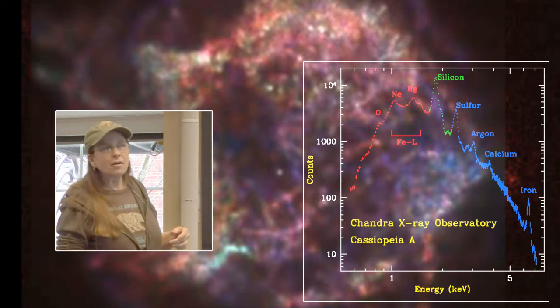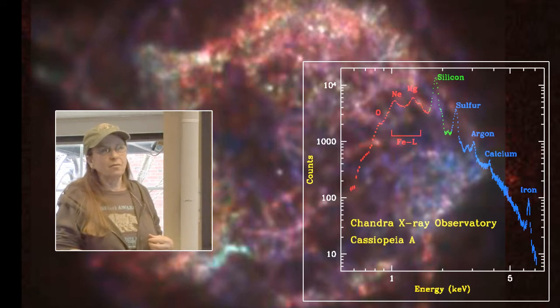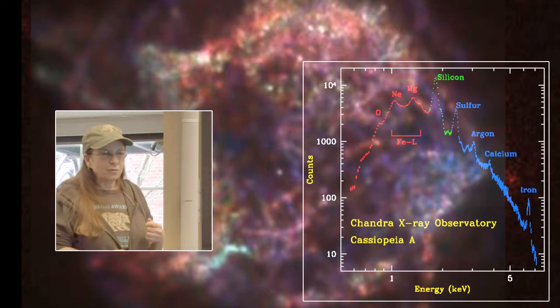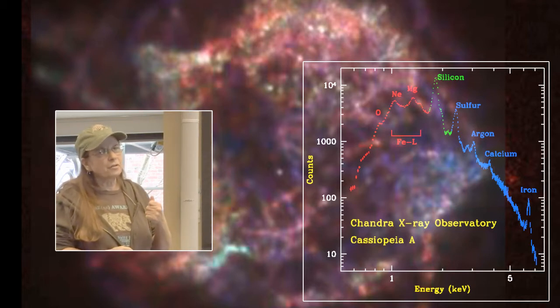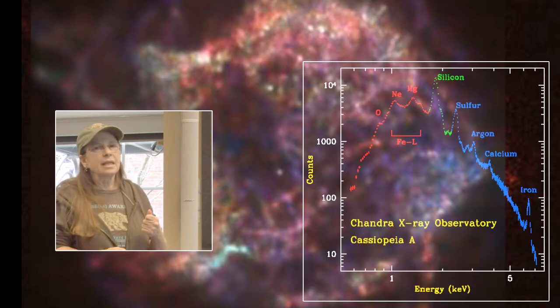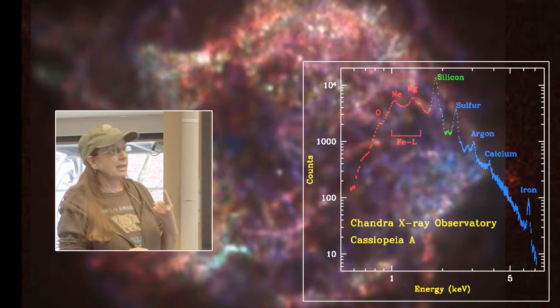Because of the instrumentation on board the spacecraft, unlike other wavelengths, Chandra knows for every single photon that hits the detectors, it knows how much energy it has and therefore what element it is. So it can plot a remnant in just one element if it wants to.